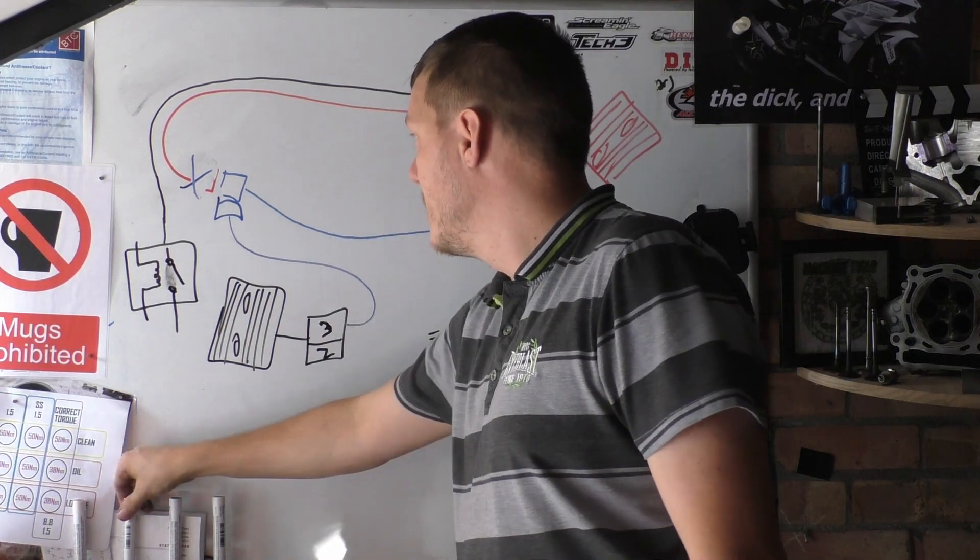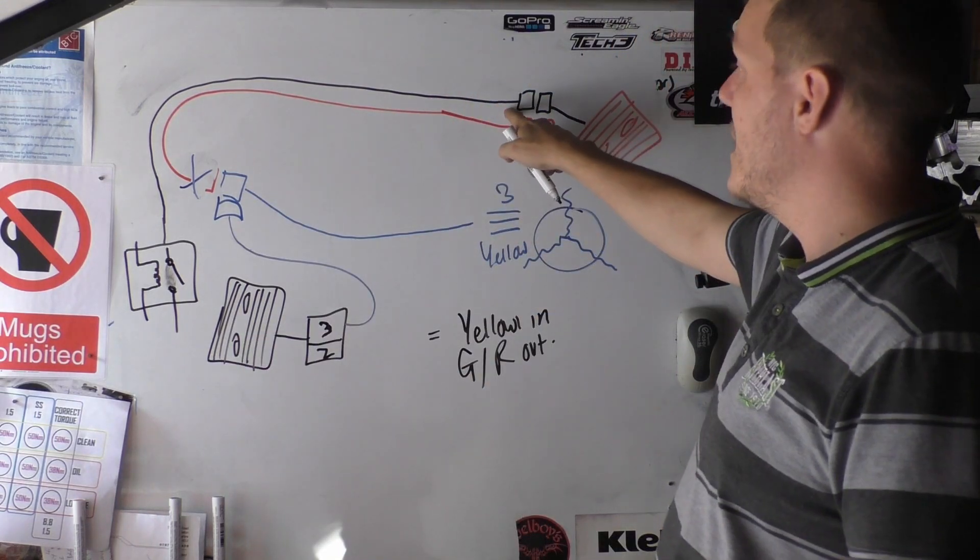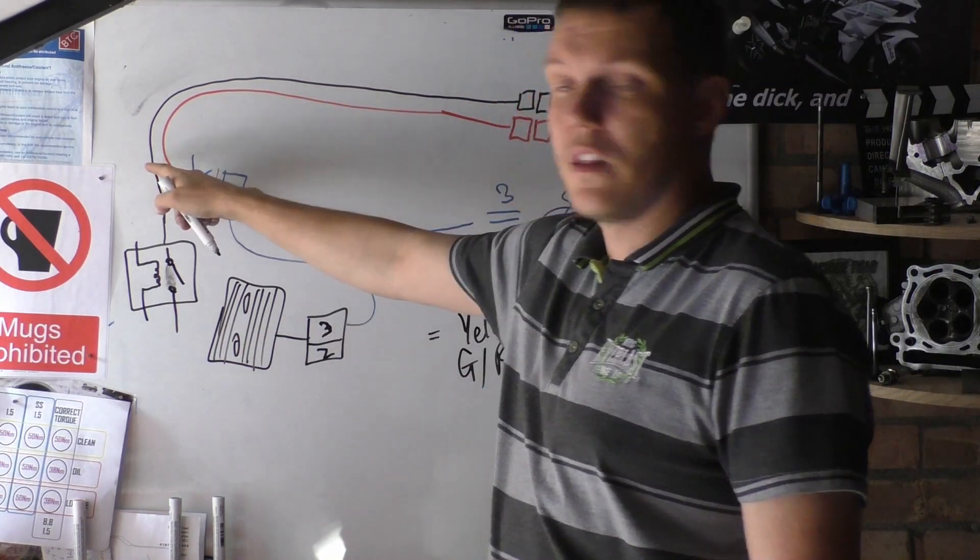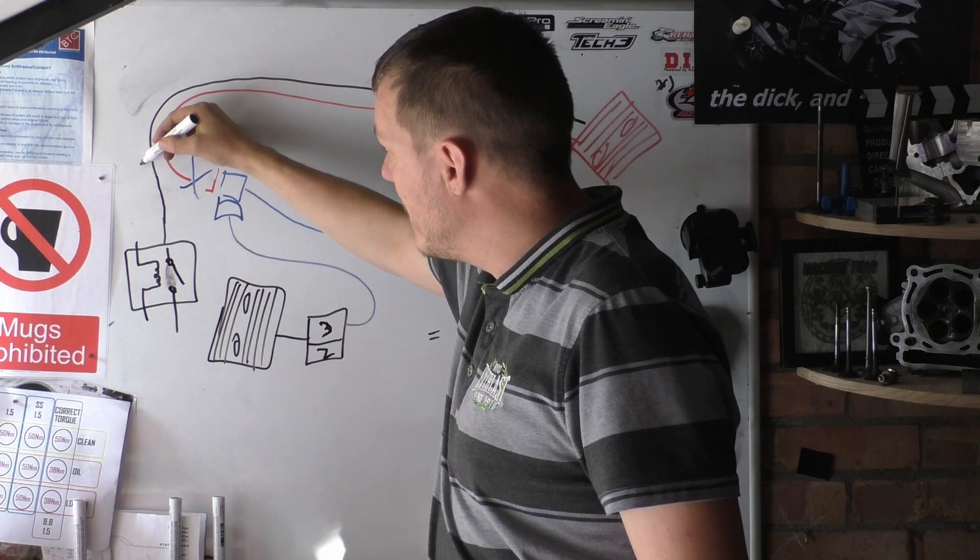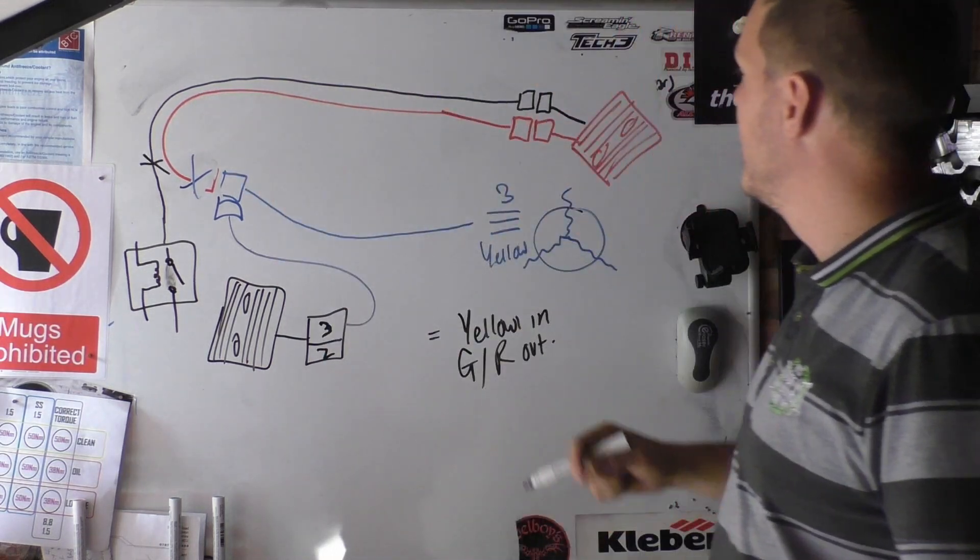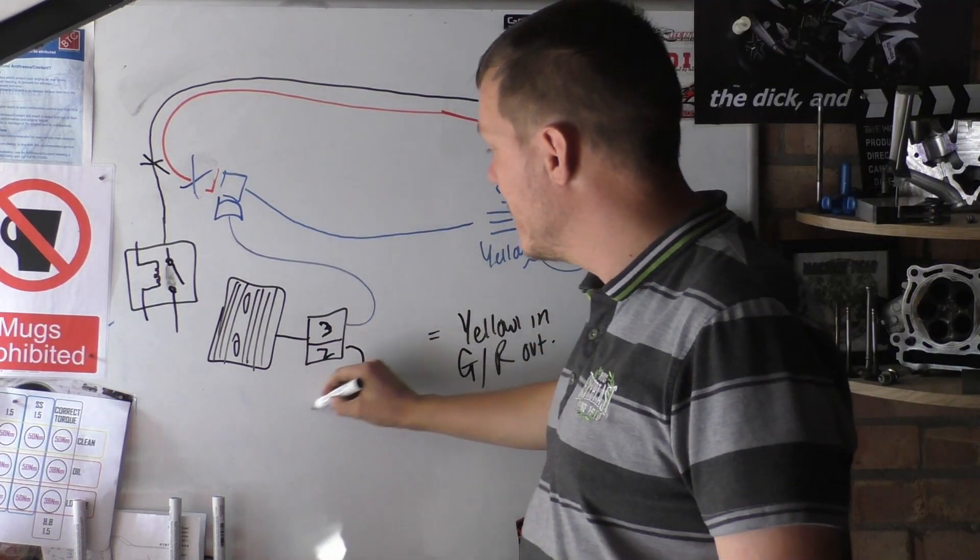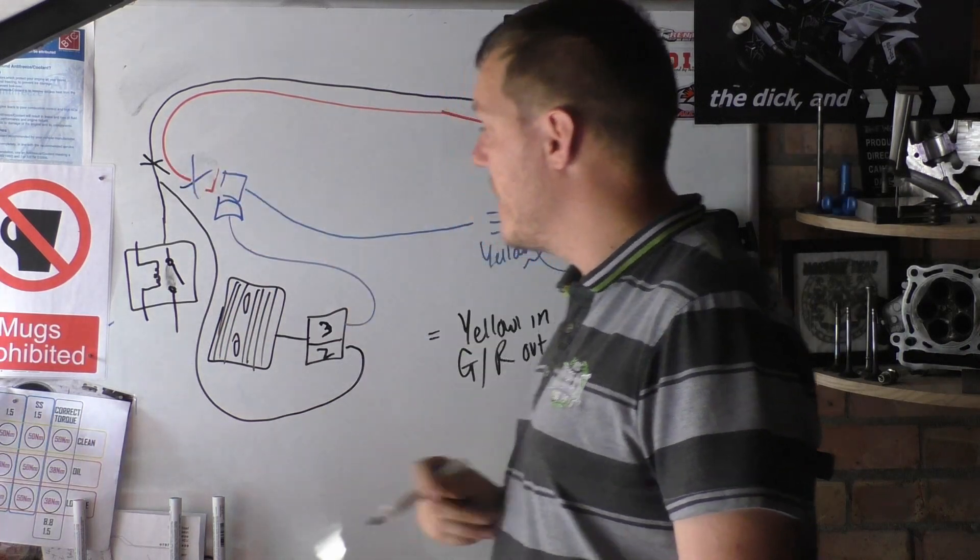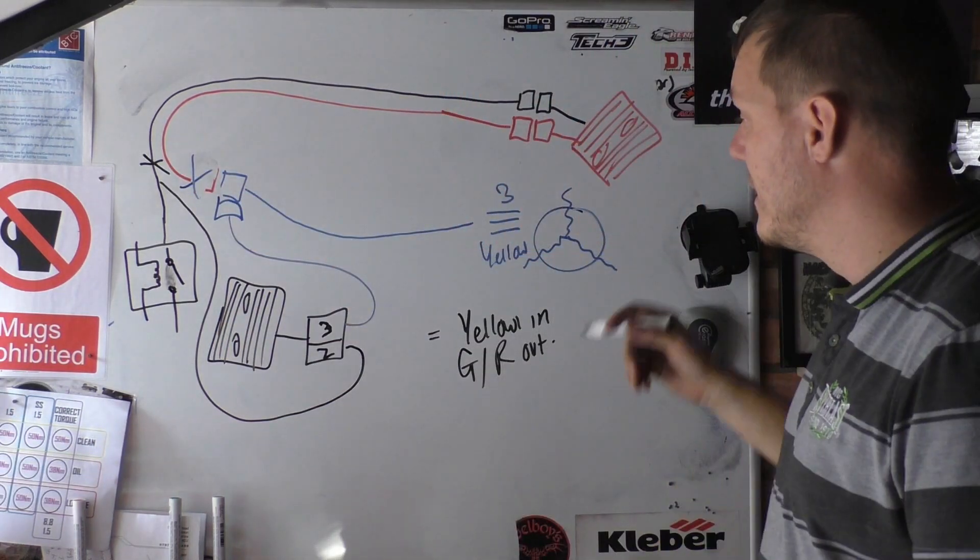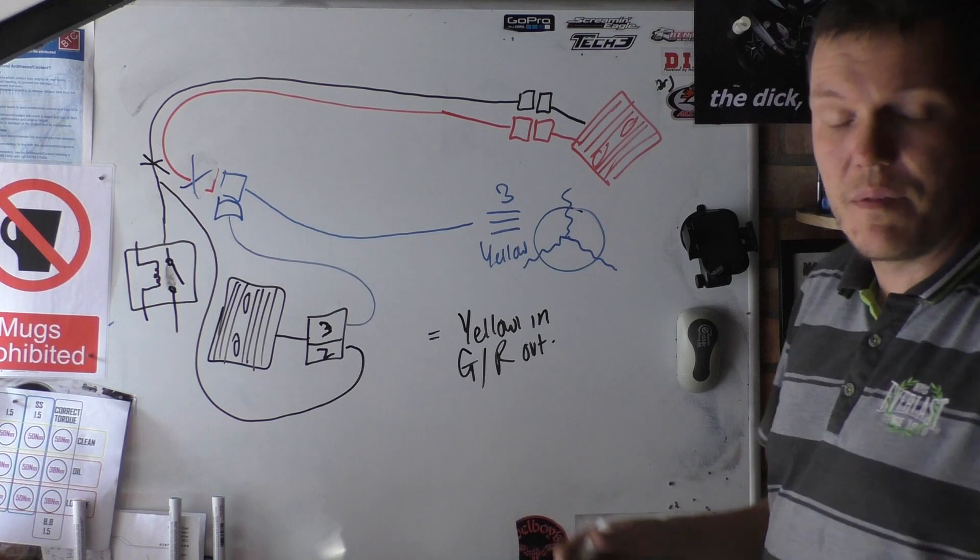Then what we're going to do is, this cable here goes from here all the way to the loom. We'll chop that there. And what we'll do is, we'll have a wire that comes from here to there, basically back into the loom. Once we've done that, then we're all fucking good.